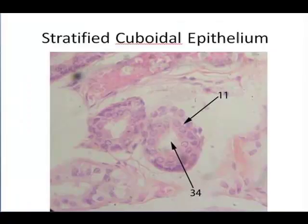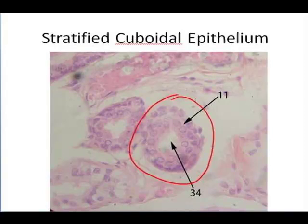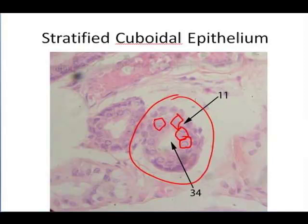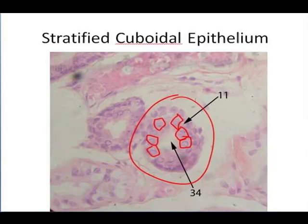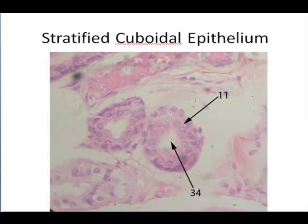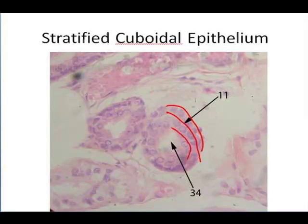This is a sweat gland, and this is stratified cuboidal. It's a little bit tougher to recognize the actual cubes, but keep in mind that the nuclei are too close together for it to be columnar — it's too square. What we have here is cuboidal cells, and there's more than one layer of them. There's a lumen right there, and that is stratified cuboidal epithelium.